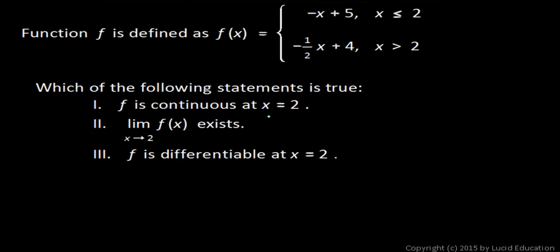Statement 1: f is continuous at x equals 2. Well, you should recognize both of these pieces as lines. These are both linear equations, and the function will be continuous if those lines have the same value at the point where the definition of the function changes, which is at x equals 2.